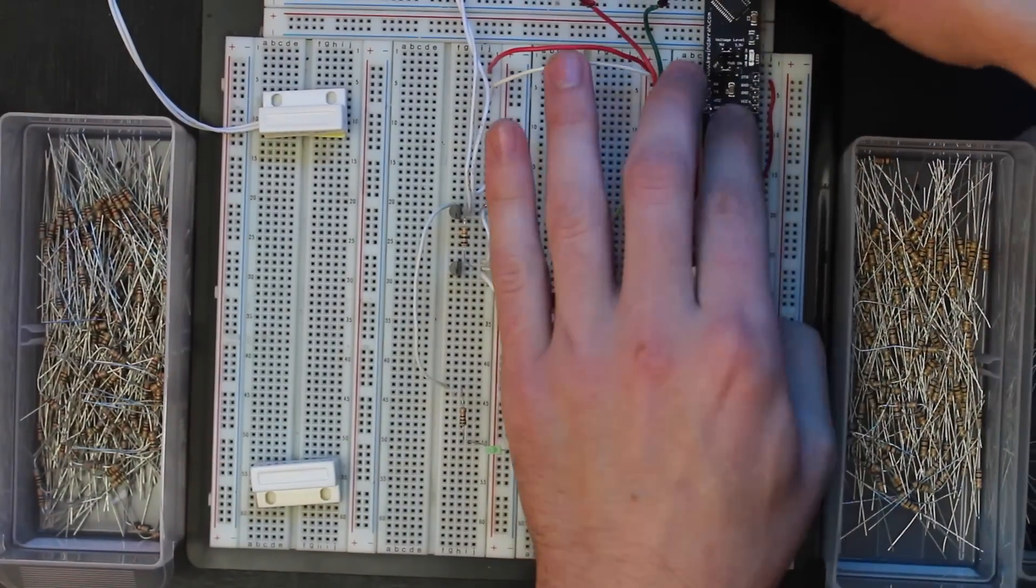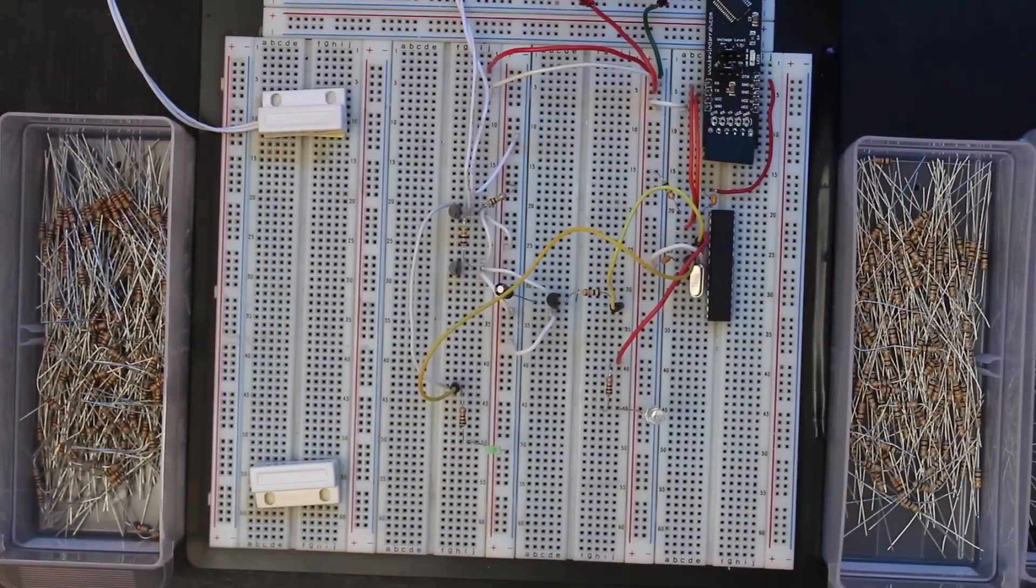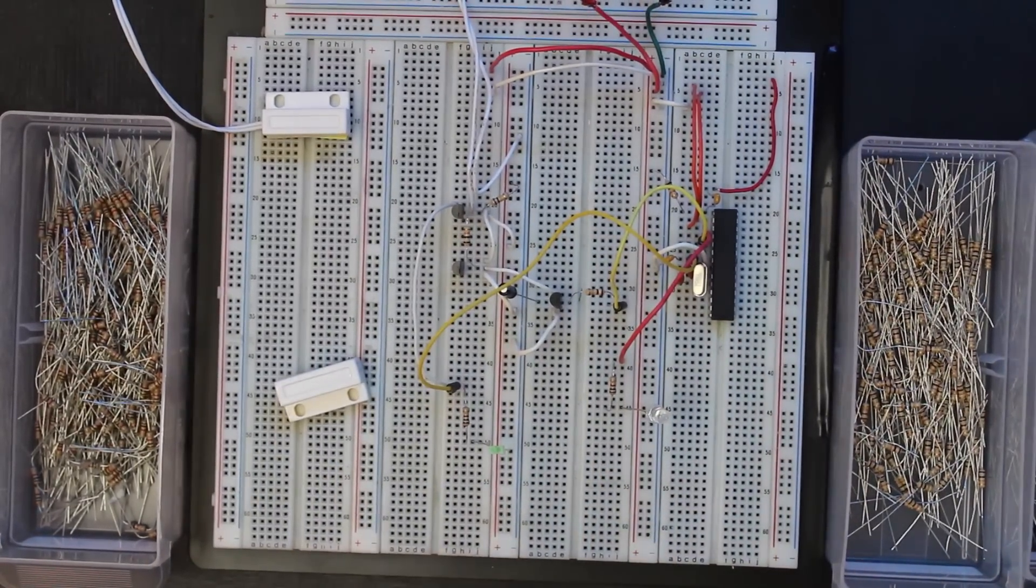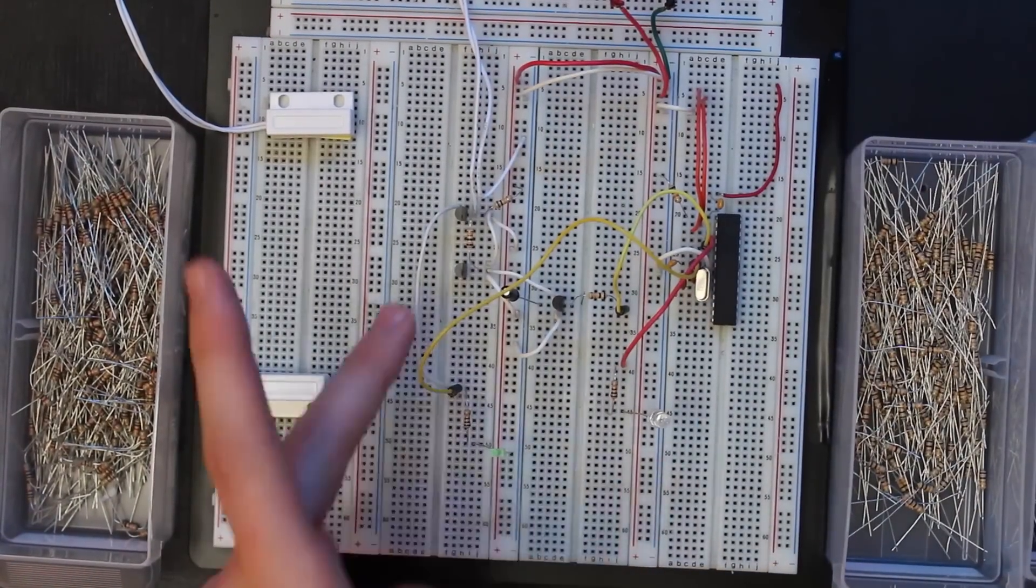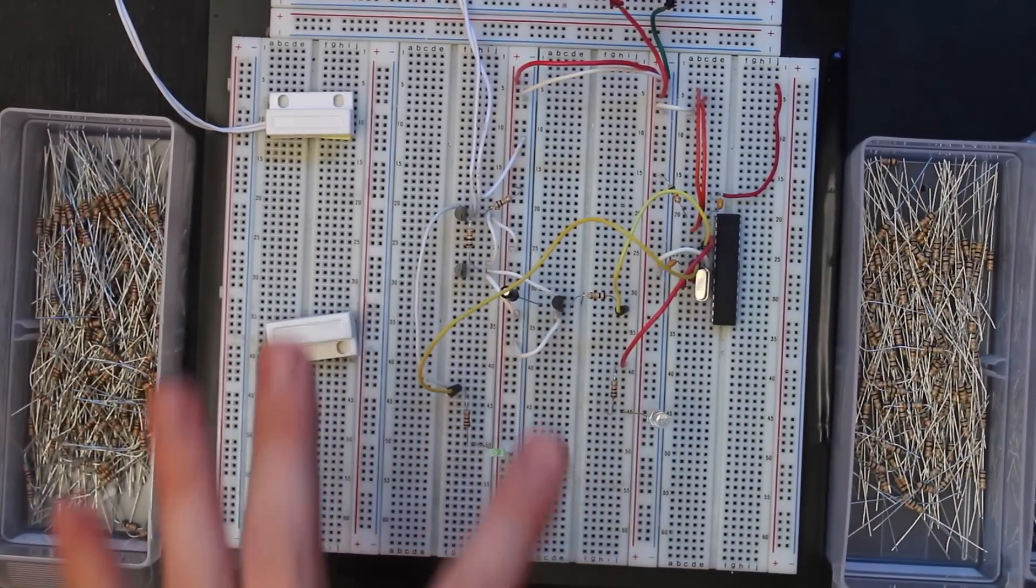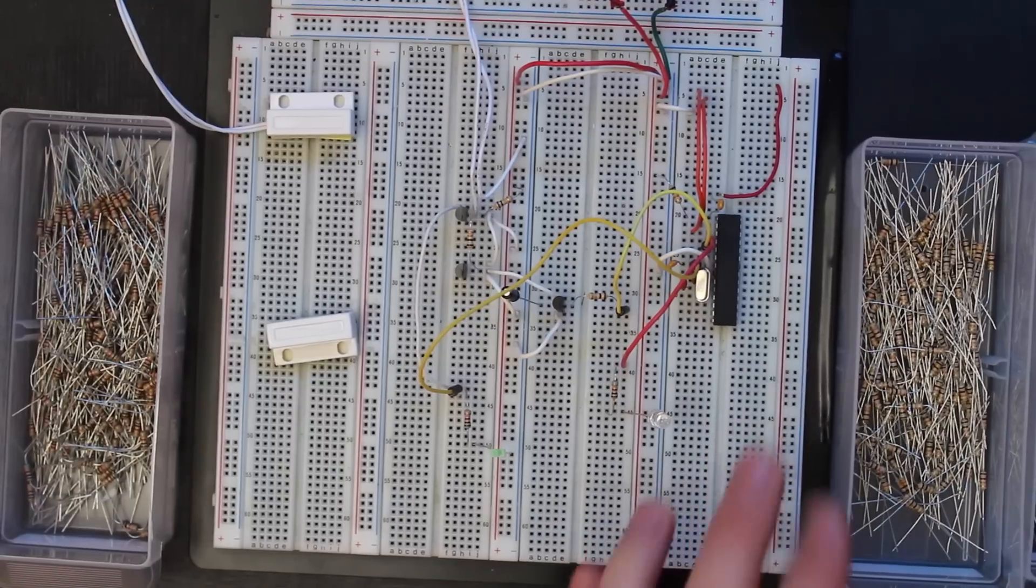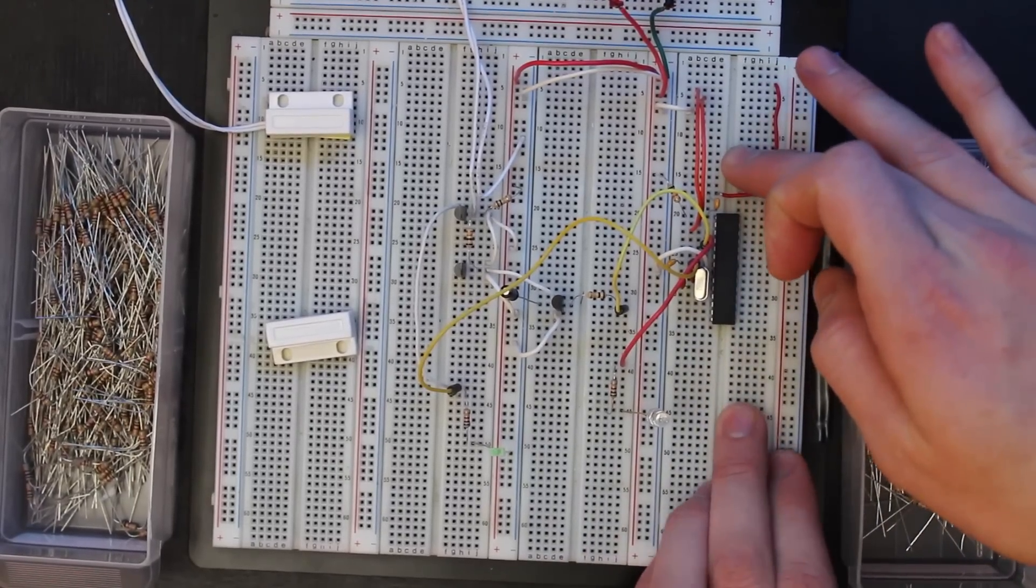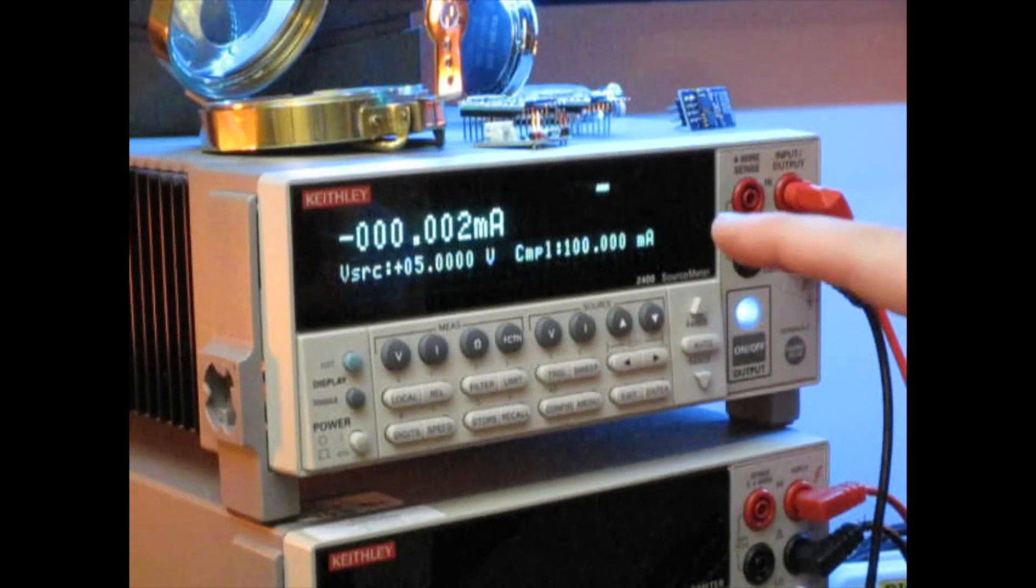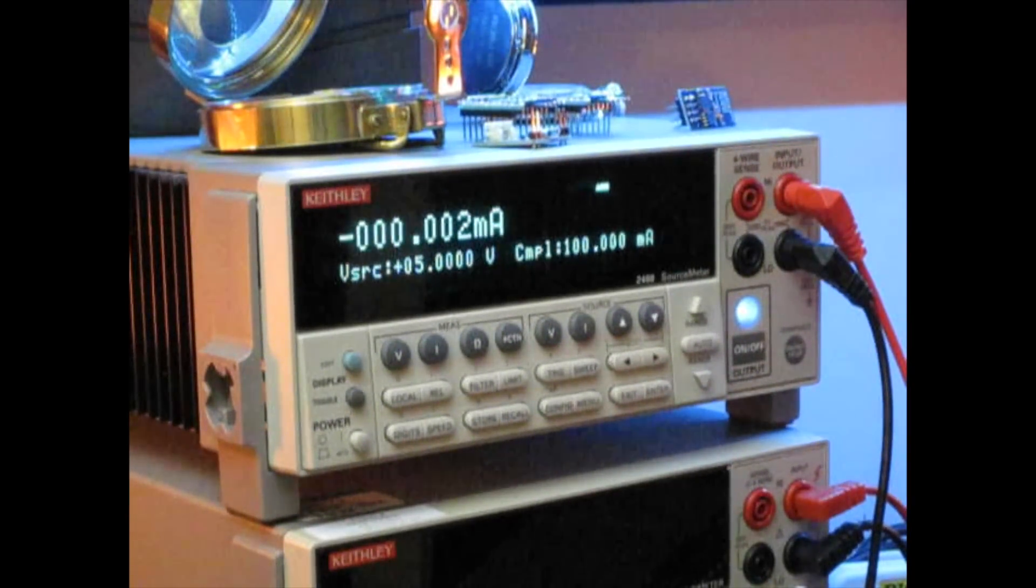Okay, so now I have the latch circuit combined with the Arduino, so the Arduino gets its power from the latch circuit. You can see on the meter here we're getting zero current